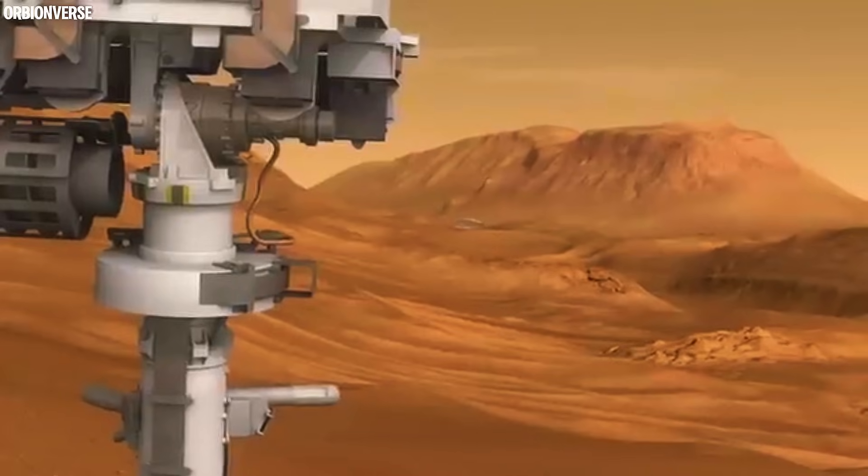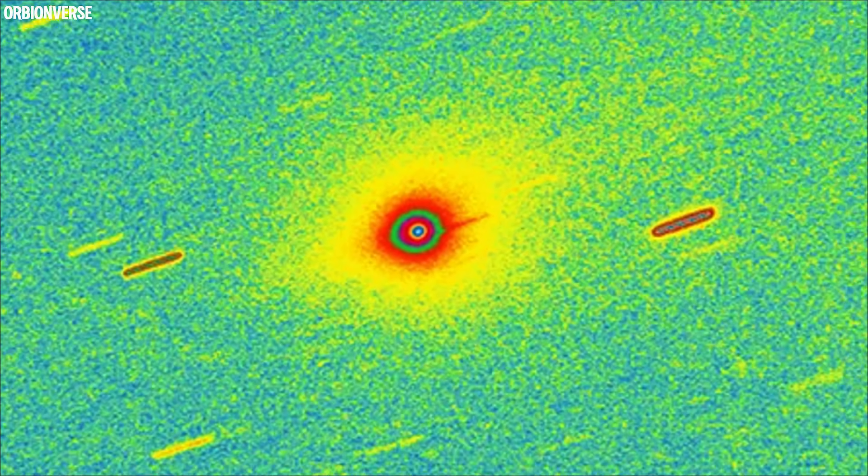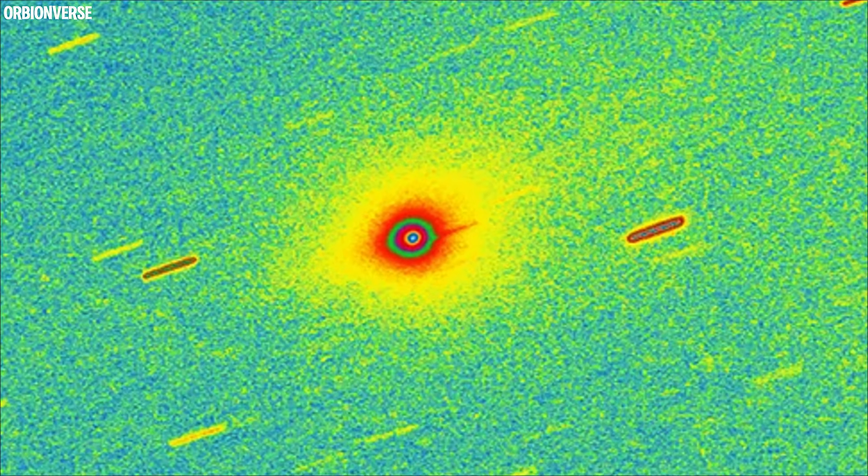Now imagine pointing a Mars camera at the sky, and the entire sensor gets covered by a comet. That means the coma surrounding Atlas is enormous, much larger than anyone expected this early.